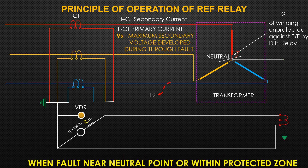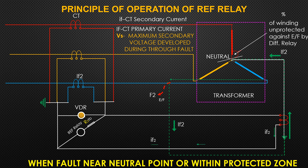During an inside fault, the secondary currents of the two CTs have no other way to go than through the relay. The voltage dependent resistor (VDR or varistor) is used to protect the CTs and windings by limiting voltage during heavy inside faults. The resistance of the secondary wiring connecting the CTs together should be as low as possible.